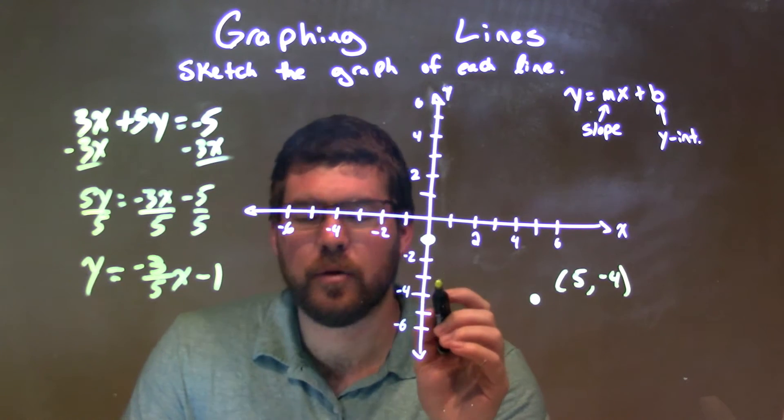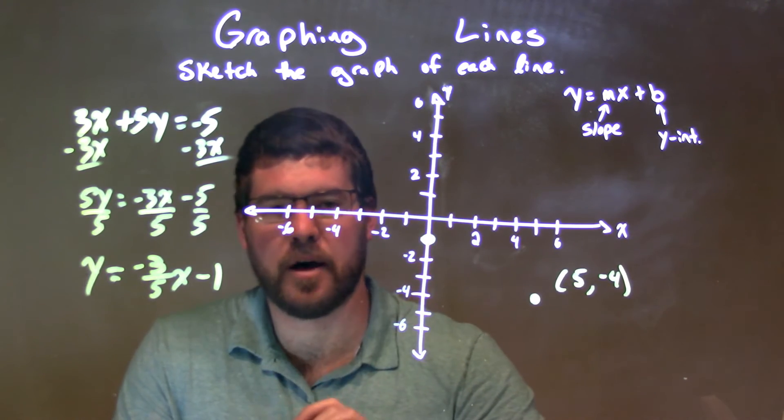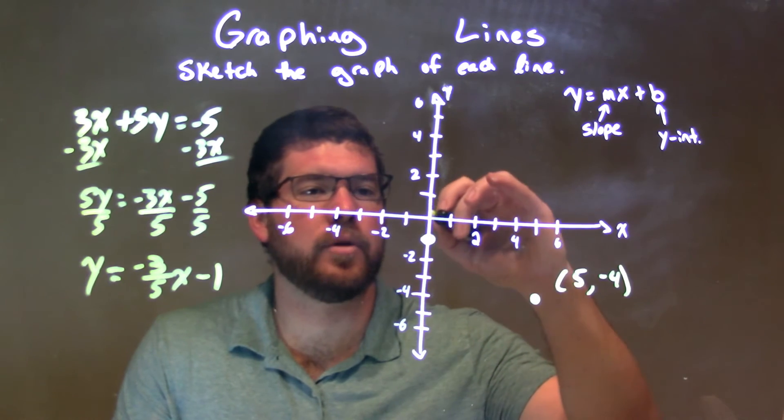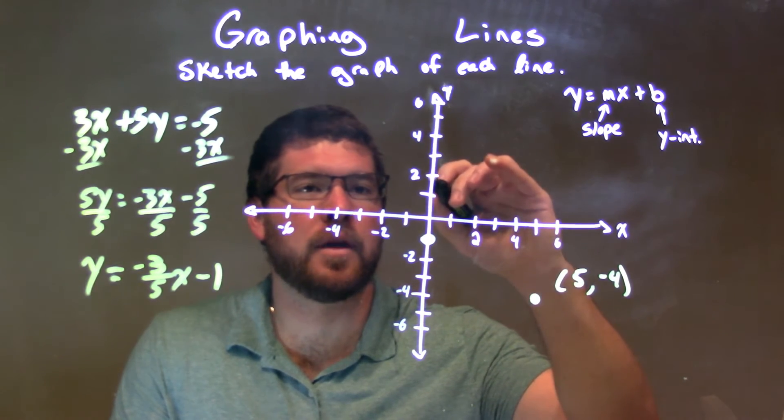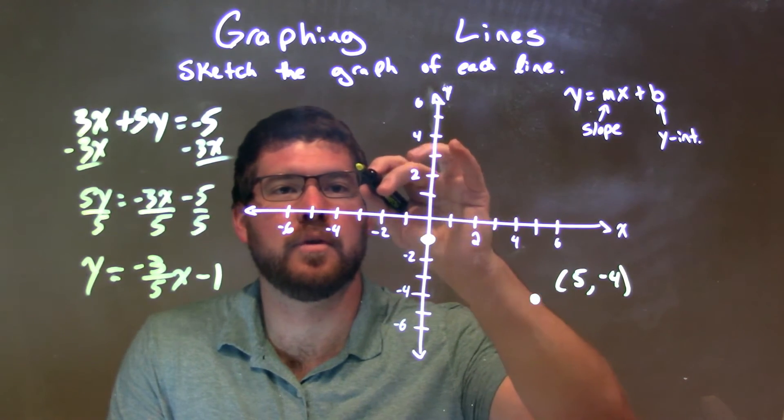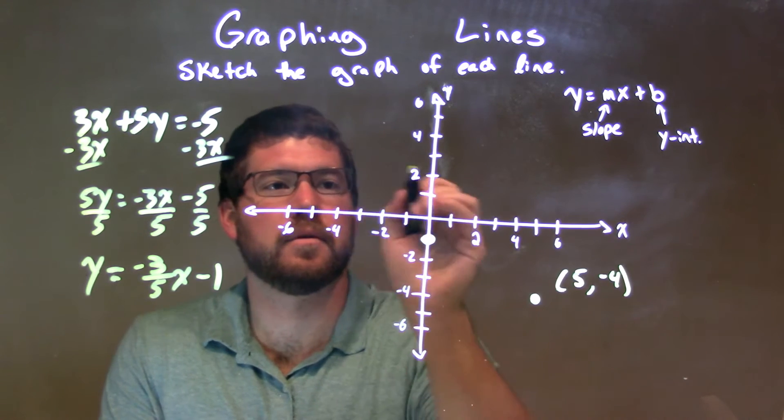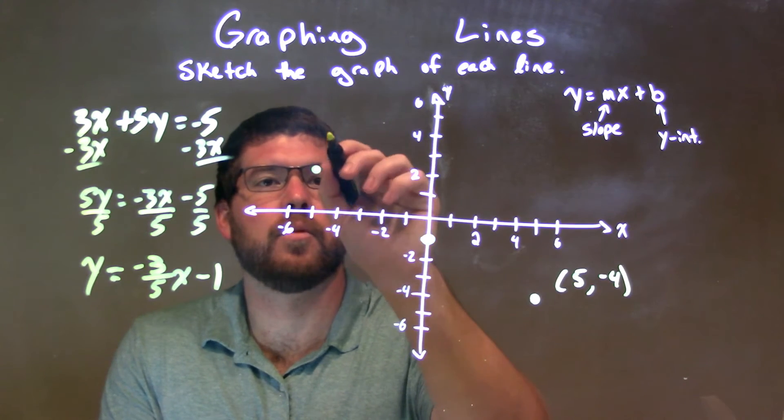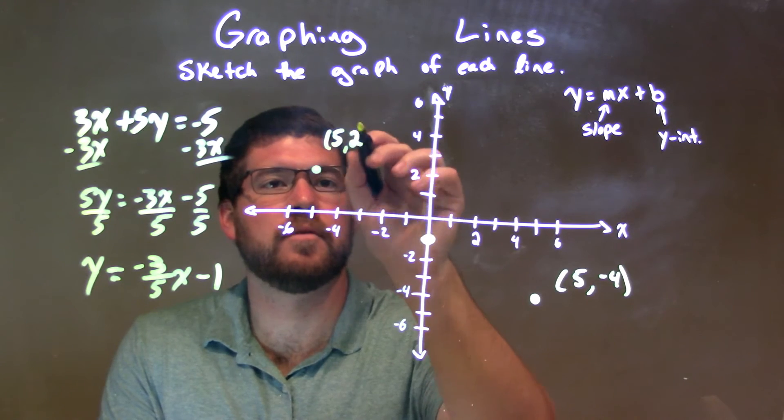And if we wanted to, we also can go up 3 units to the left 5, right? So if we go up 3 units: 1, 2, 3, and left 5: 1, 2, 3, 4, 5 right here. So that coordinate point would be (negative 5, 2).